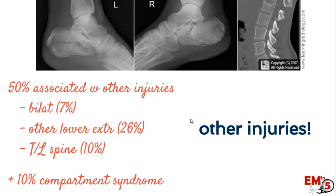The other big thing with calcaneal fractures is that 50% are associated with other injuries, mostly based on the mechanism. 7% have bilateral calcaneal fractures. About 26% have some other fracture of the lower extremities. And 10% are going to be associated with a T or L spine fracture. So if they have a fall from height, any back pain whatsoever, and have a calcaneal fracture, you need to image their T or L spine and look for compression fractures.